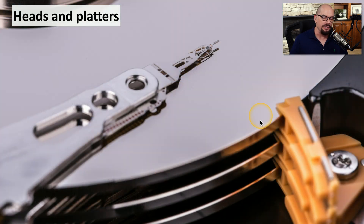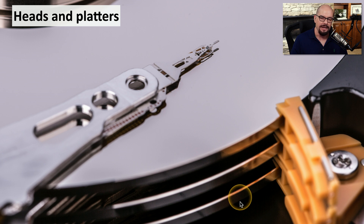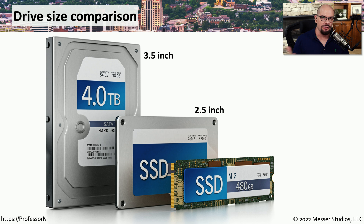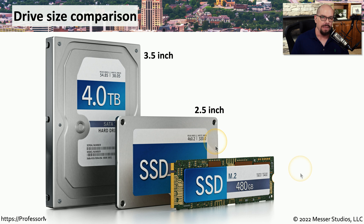Here's a better view from the side. You can see there's not just a single platter — there are multiple platters, and there are multiple heads connected to both the top and the bottom of every platter. This allows you to read and write data from every single available spot on these spinning platters. You may find different sizes for storage devices on your systems. It's very common on larger desktop computers to find 3.5-inch drives, and you might also find 2.5-inch drives on desktops and commonly in laptop platforms. On newer systems, whether desktop or laptop, you may find an M.2 drive, which is much smaller than the 3.5 or 2.5-inch drives.